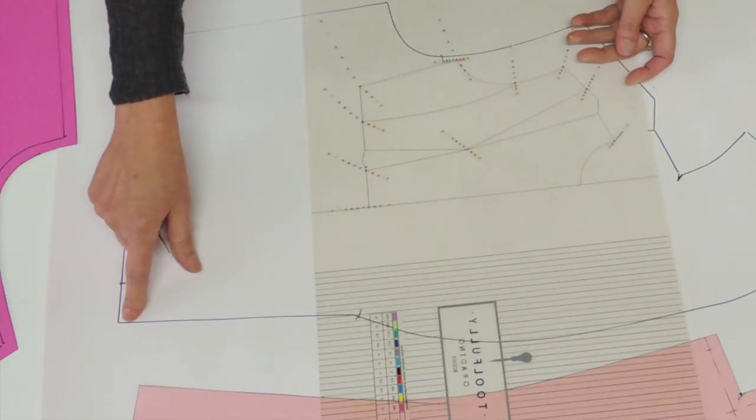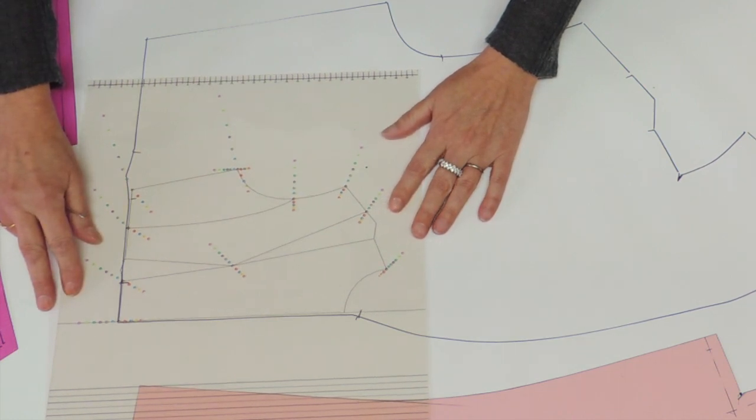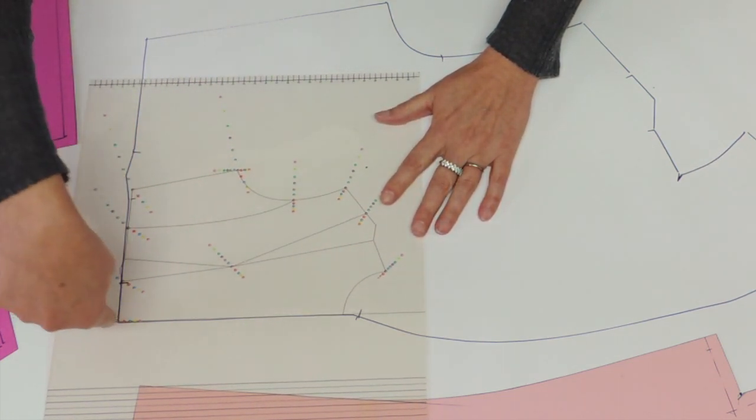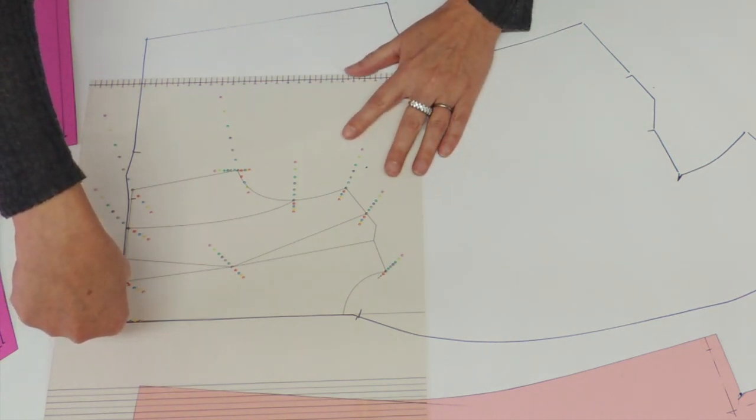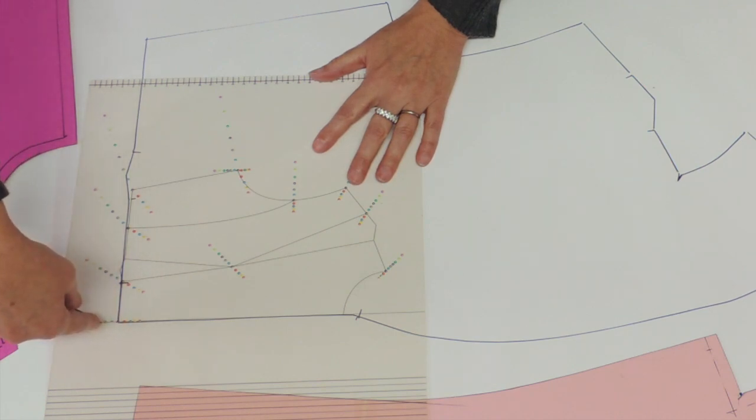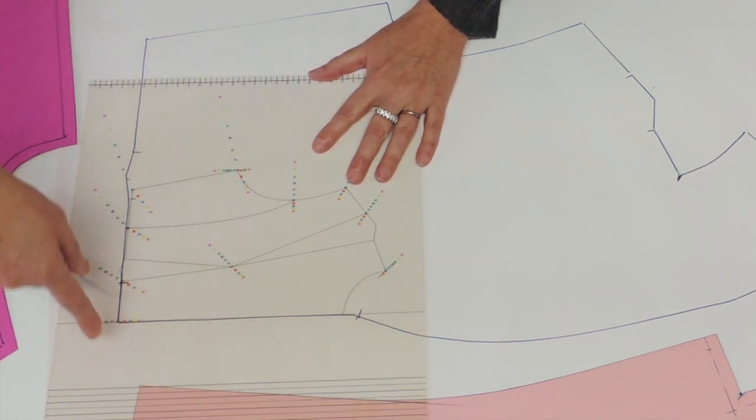This time I will start at the bottom at the waist, and I said that I'm going to do two sizes bigger. So I put my basic size, that is the black one, right on the drawing that I just did, and I'm going to point two sizes bigger and just with the hole make the little hole.